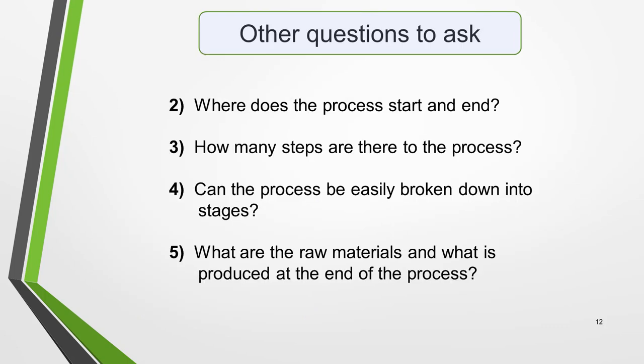Question 2: where does the process start and end? For a linear process this will usually be obvious, but it may be harder to determine for a cyclical process, so it's important that you examine the graphic carefully. Question 3: how many steps are there to the process? If there are a lot, it can be helpful to number them from one to the final stage. Question 4: can the process be easily broken down into stages? In the brick making graphic, for example, there are three stages: creating the bricks from clay; manufacturing the finished product by drying and firing; and finally, packaging and delivery. In the life cycle graphic, there are also three distinct stages of development: the egg, the juvenile, and the adult.